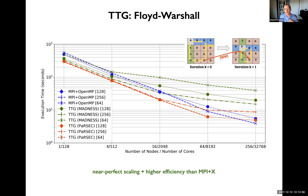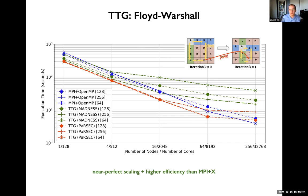Another algorithm — again not data-dependent but a paradigm of matrix-like computation — is Floyd-Warshall: take an adjacency matrix and compute shortest paths between every pair of nodes. TTG comes out on top here as well. The only issue is that for some technical reasons we're unable to take the smallest tile case and extend it to the largest number of nodes, so the MPI-based implementation was able to beat us in that corner case. But until then, we beat it by a significant amount — certainly higher efficiency than a manual MPI+X implementation.